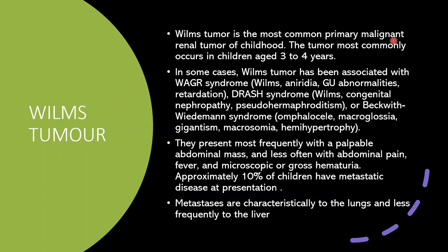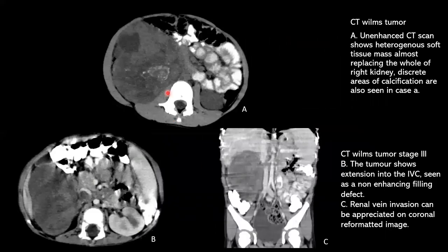Coming to Wilms tumor — the most common primary malignant renal tumor of childhood, seen in children aged 3 to 4 years. In some cases it is associated with WAGR syndrome, Drash syndrome, or Beckwith-Wiedemann syndrome. They present most frequently with a palpable abdominal mass, less often with abdominal pain or gross hematuria. Approximately 10% have metastatic disease at presentation, with metastases to the lungs and less frequently to the liver. Unenhanced CT shows a heterogeneous soft tissue mass almost replacing the right kidney with discrete areas of calcification.